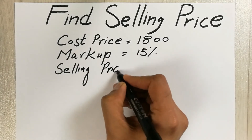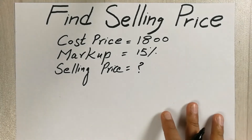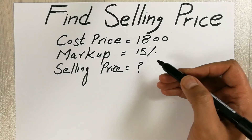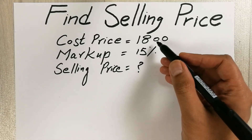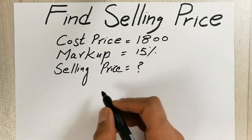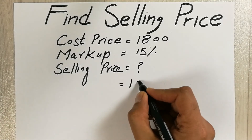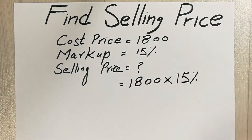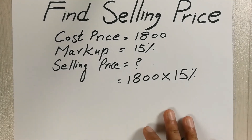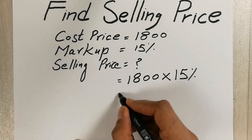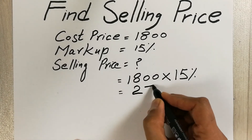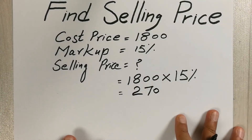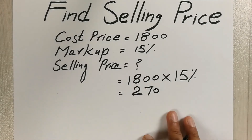The 15 percent is the rate of markup. So in the first step we will find out how much is 15 percent of 1800. Simply, what we will do is multiply 1800 by 15 percent. When we multiply it, our answer will be 270.